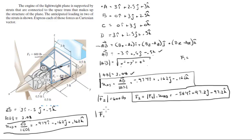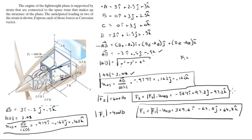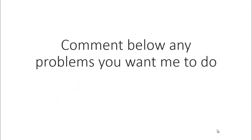The magnitude of F1 is given as 400 pounds. F1 in Cartesian vector form is the magnitude multiplied by the unit vector from C to D. Multiplying 400 by each of the three unit vector components gives 389.6i minus 64.8j plus 64.8k. So those are the Cartesian vector forms of F2 and F1 — final answer. Please comment below if you want me to do any problems and I'll be happy to help.